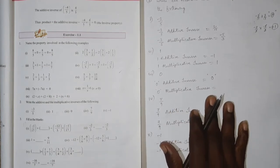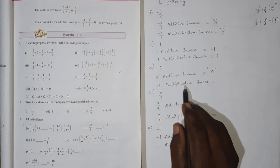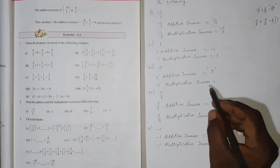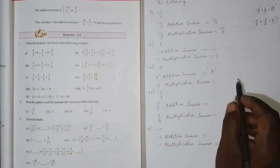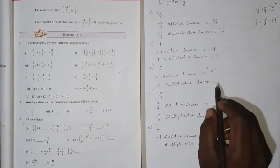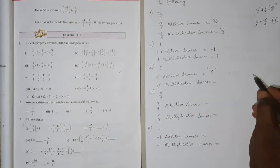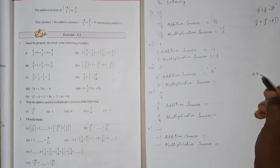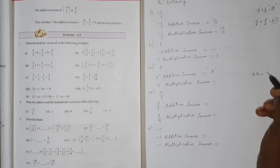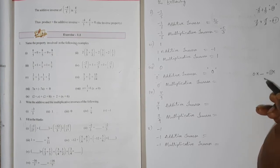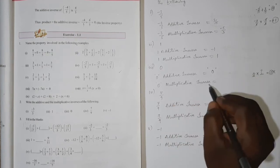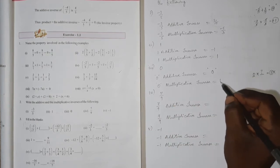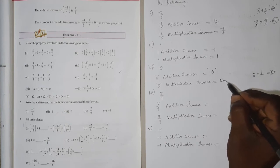Now, what is the multiplicative inverse of zero? For the multiplicative inverse, two numbers multiplied must give 1. But zero multiplied by any number cannot give 1, so zero has no multiplicative inverse — it does not exist.